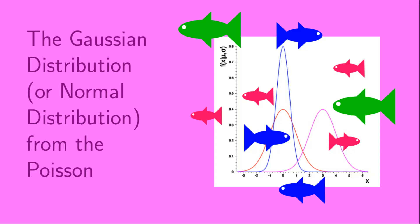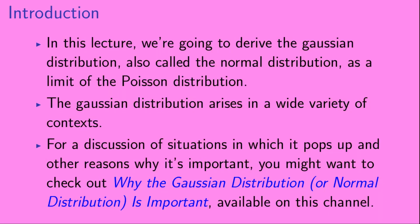Welcome to the Gaussian distribution, or normal distribution, from the Poisson. In this lecture, we're going to derive the Gaussian distribution, also called the normal distribution, as a limit of the Poisson distribution. The Gaussian distribution arises in a wide variety of contexts. For a discussion of situations in which it pops up and other reasons why it's important, you might want to check out 'Why the Gaussian distribution, or normal distribution, is important,' available on this channel.